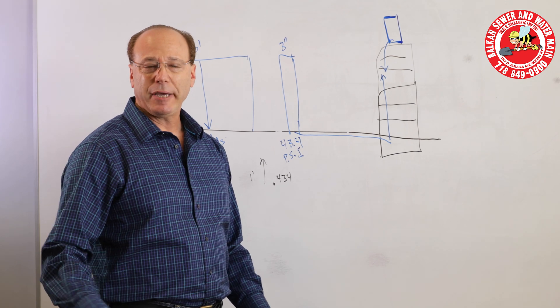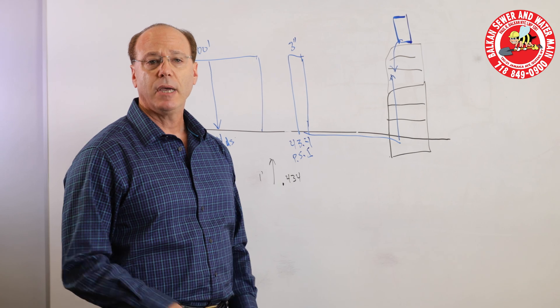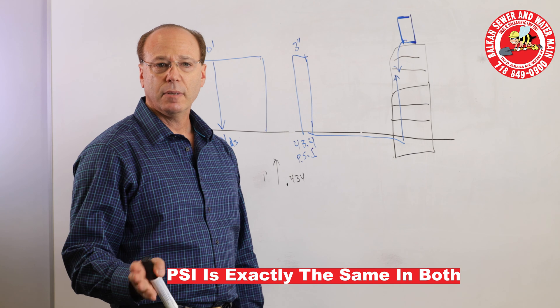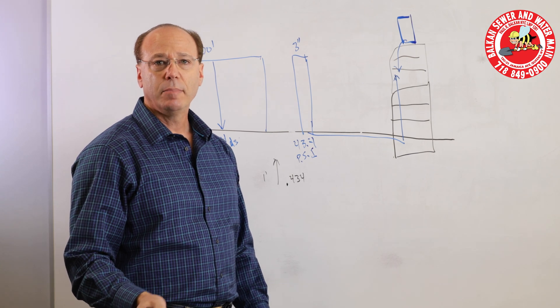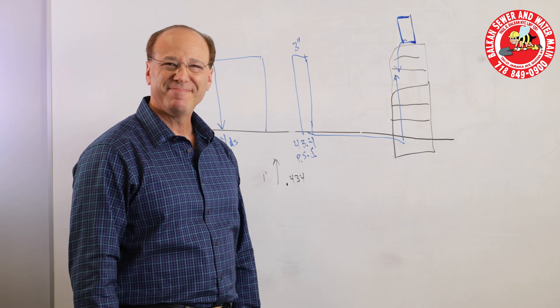So the answer to my initial question is what has a greater PSI a two inch pipe at the same height as a five gallon pail of water. They're exactly the same. The PSI is exactly the same because it's calculated by height. I hope that helps you guys out there. Thank you.